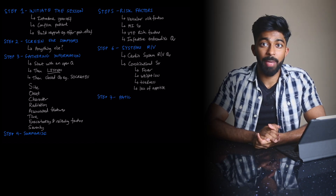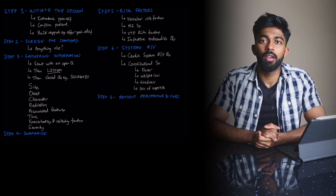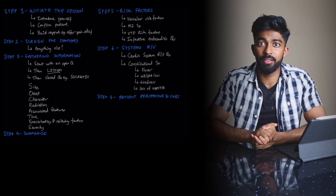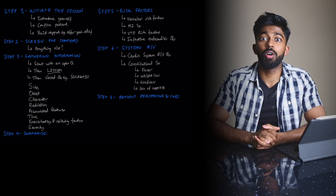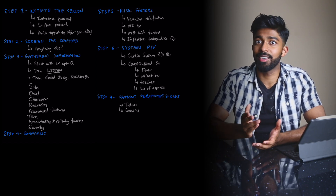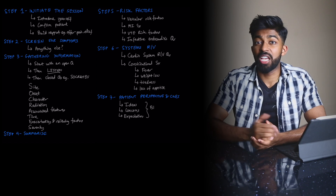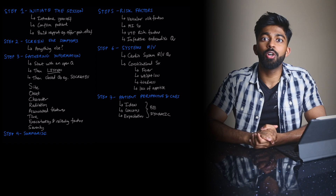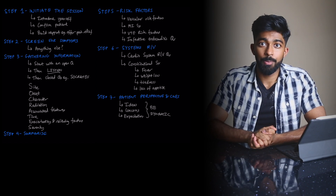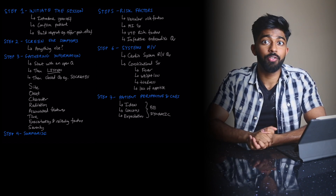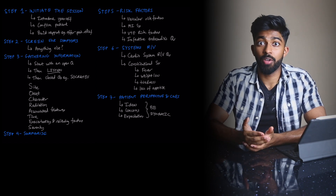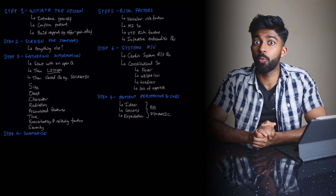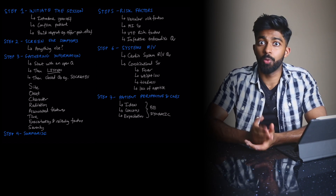Step seven is the patient's perspective and picking up on cues. Even though this is a separate section, in a really good history this part is dynamic. It involves three parts — ICE: what are the patient's ideas, concerns, and expectations? You'd ask: 'Do you have any ideas what might be causing all of this? Is there anything in particular you're worried about? What are you most hoping for from the doctors today?' The best time to address the patient's perspective is defined by the cues you get — if your patient mentions their dad having a heart attack early on, that's when you explore ICE, not after finishing your screening.